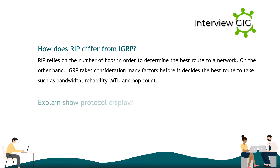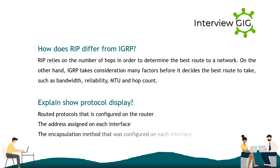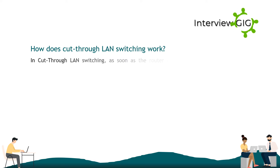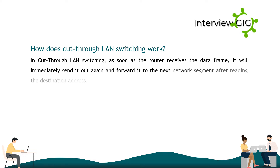Explain show protocol. It displays routed protocols configured on the router, the address assigned on each interface, and the encapsulation method configured on each interface. How does cut-through LAN switching work? In cut-through LAN switching, as soon as the router receives the data frame it will immediately send it out and forward it to the next network segment after reading the destination address.